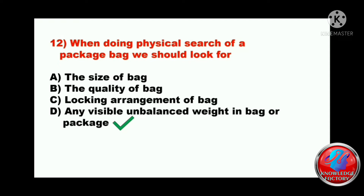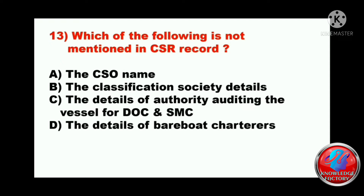Question thirteen: which of the following is not mentioned in the CSR record? A) the CSO name, B) the classification society details, C) the details of authority auditing the vessel for DOC and SMC, or D) the details of bareboat charters. The answer is D - the details of bareboat charters.